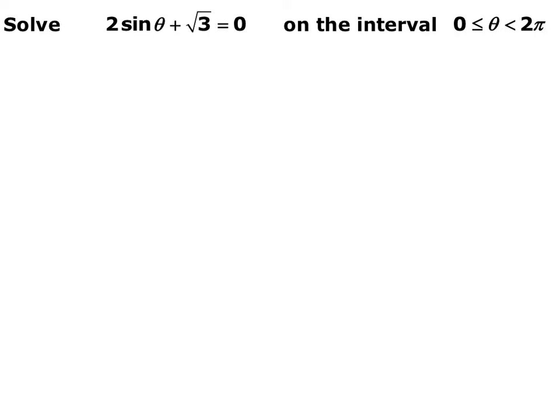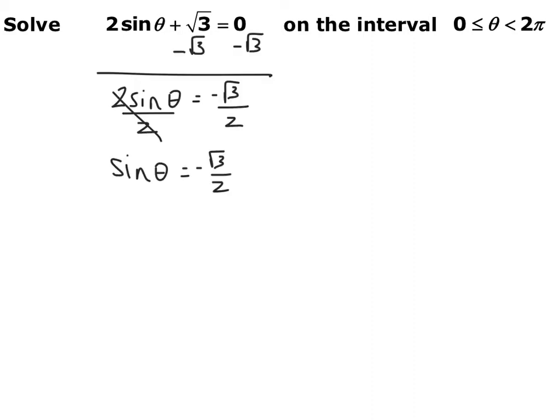Now we want to solve the equation 2 sine of theta plus root 3 equals 0 for thetas between 0 and 2 pi. When you're doing one like this, you want to isolate the sine of theta just like you would any other variable. So subtract root 3 from both sides and then divide by 2, and you get sine of theta is equal to negative root 3 over 2.